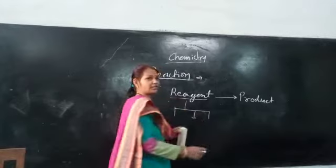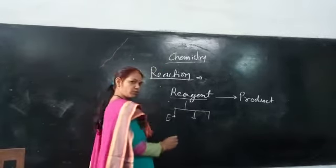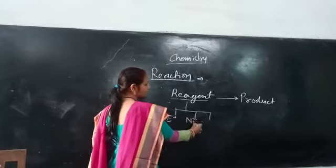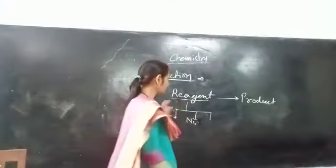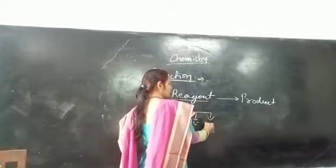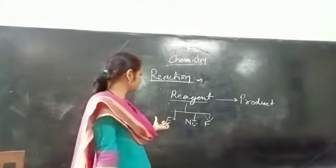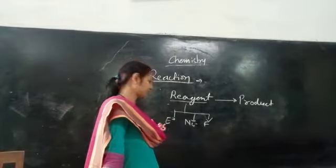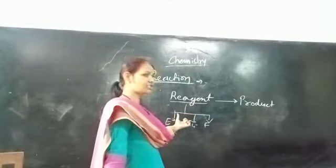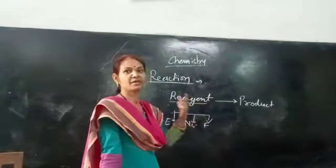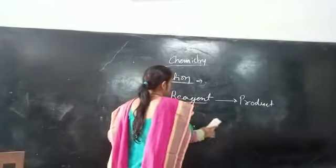How can electrical reagents become? Electrophiles are E, E plus. Electrophile and nucleophile — one is free radical. In short, we will write three types: electrophiles and nucleophiles. Electrophiles are E plus. Nucleophiles are negatively charged, mostly negatively charged. This is the free radical species; we will tell you in detail about the free radical species.